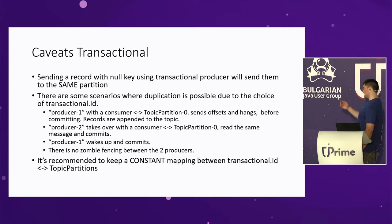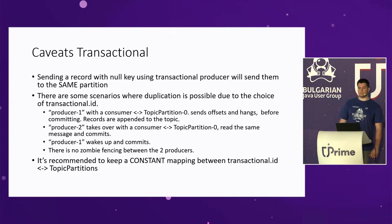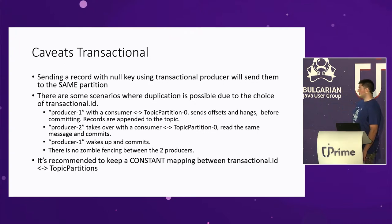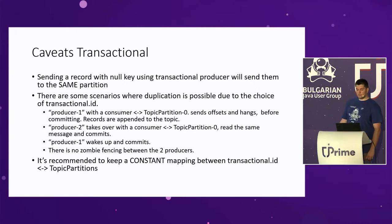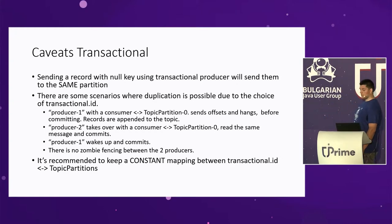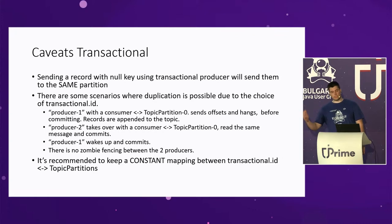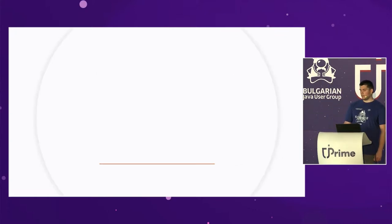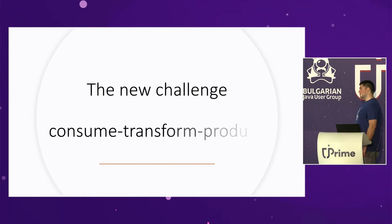Some caveats: do not expect you won't have duplication using the transactional producer — there is a certain scenario where it could happen. It is recommended to keep a constant mapping between the transactional ID and the topic partitions. Kafka Streams does this for us. We need the transactional producer to solve the consume-transform-produce challenge.